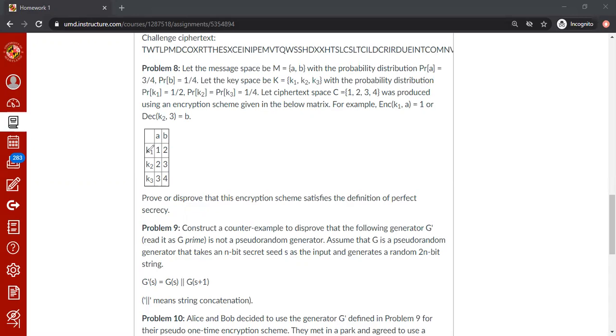And we have the key space made of three keys, key k1, k2, k3. If I encrypt message a using key k1, the ciphertext will be 1. If I encrypt a message a using key k2, the ciphertext is 2. That's how you interpret this table.